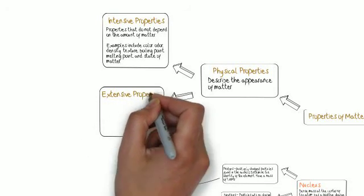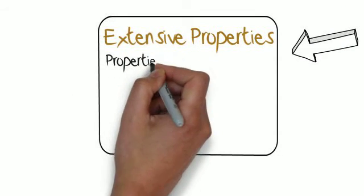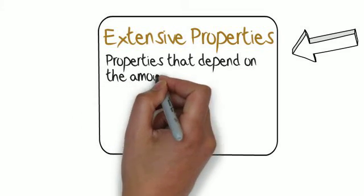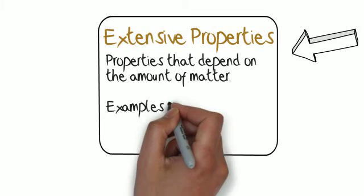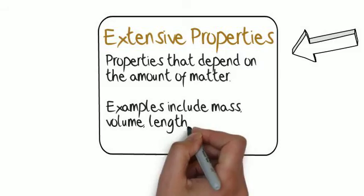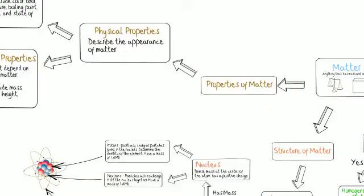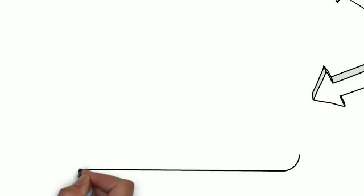Extensive physical properties are properties that do depend on the amount of material present. Properties like mass, length, width, volume, height, are not great for identifying the nature of the material because they can change as you change the amount of material.